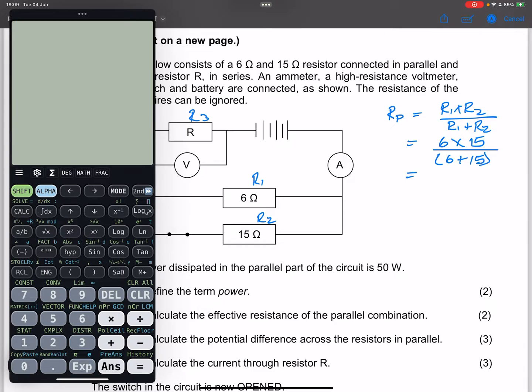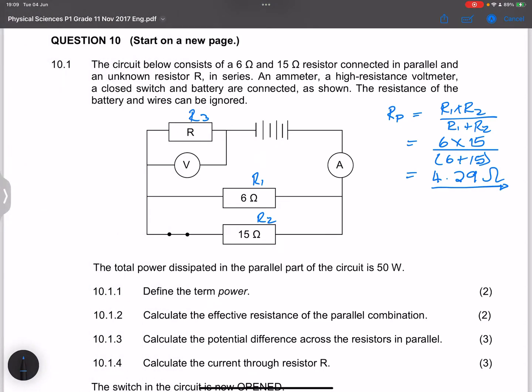So I am going to say, well, this is 6 times 15 divided by 6 plus 15. And so that gives me a resistance of 4.29 ohms. So that is the effective resistance of our parallel resistors.